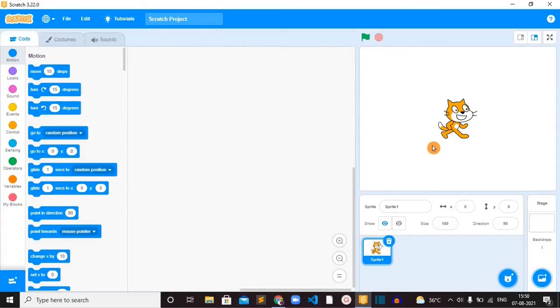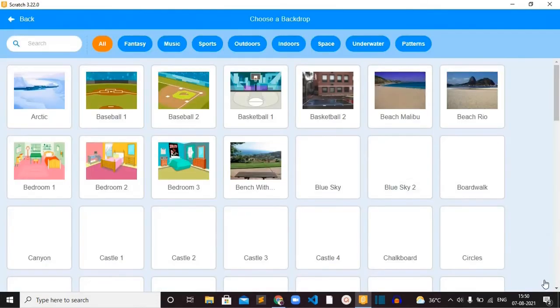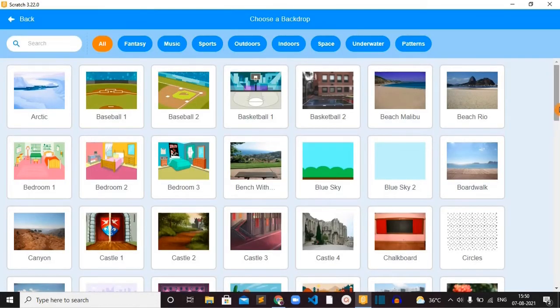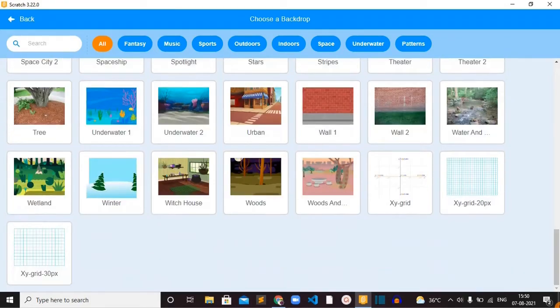This is the new project in scratch. And before starting to do the example, to understand the coordinate system better, you can make use of the x y grid backdrop which is available in the backdrop library. So you can go to backdrop library. Under all category, if you go down, you can see here x y grid backdrop.